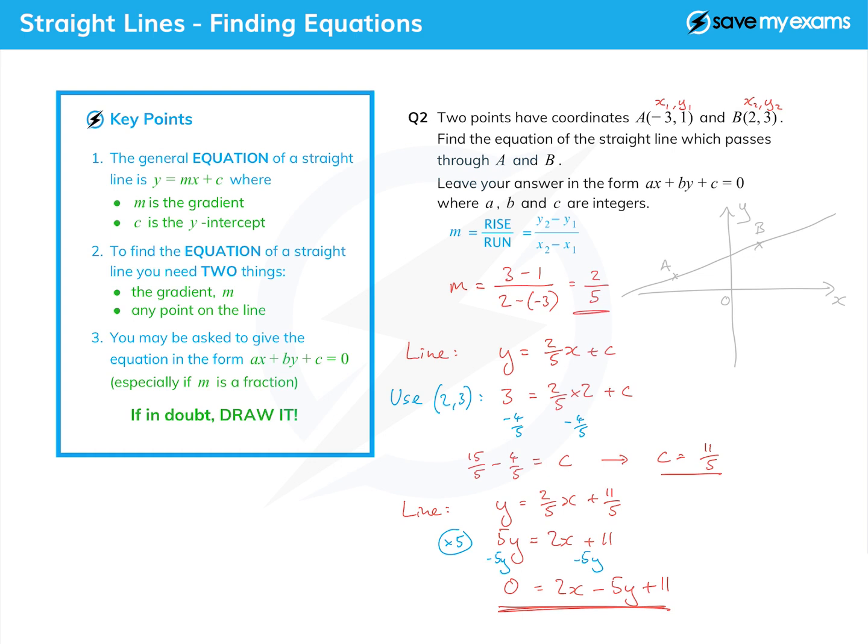So there we go, that's how we find the equation of a straight line. Remember, somehow you have to find m and somehow you have to find a point on the line.